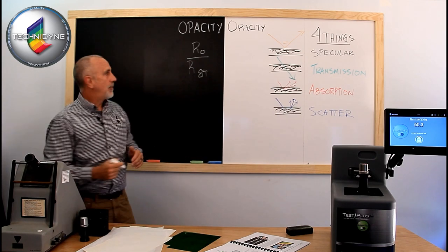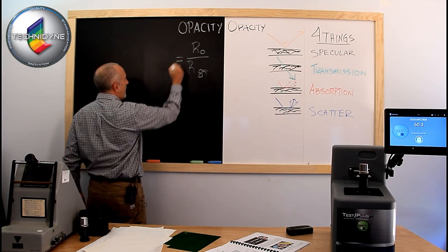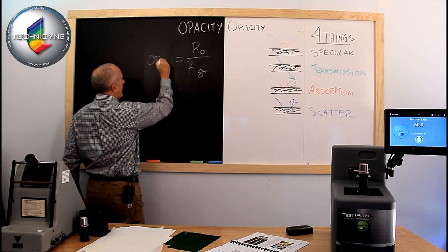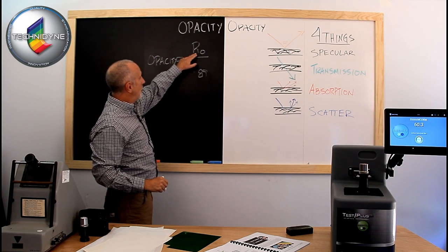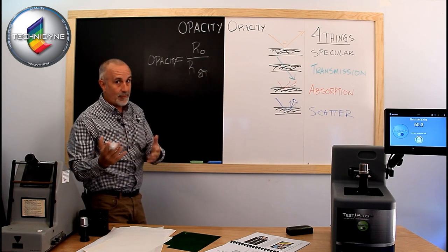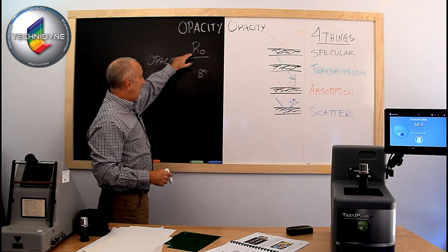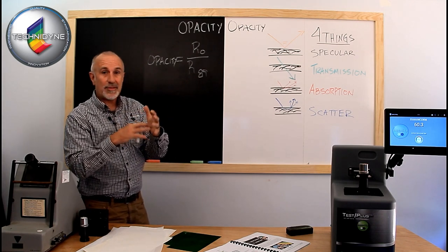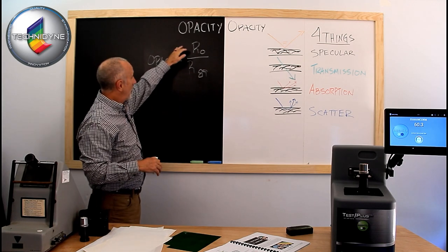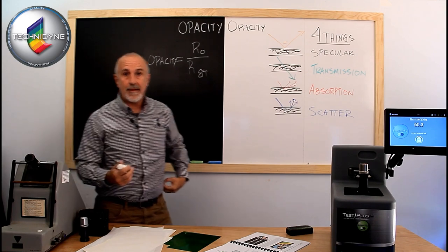So R0 divided by R89 became the opacity value. So if R0 and R89 were the same number, it would be 100%. This is always going to be your lower number because it's backed by the black body. So if it's not 100% opaque, this will be lower than that, so it's a percent of basically.